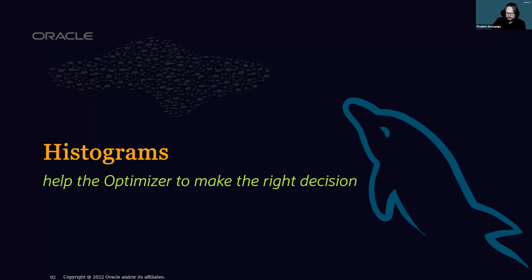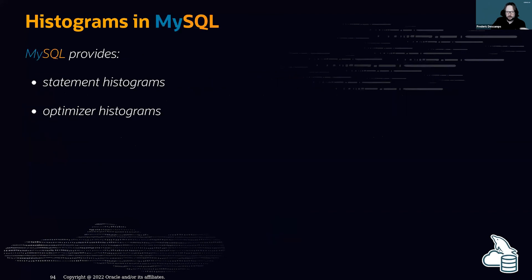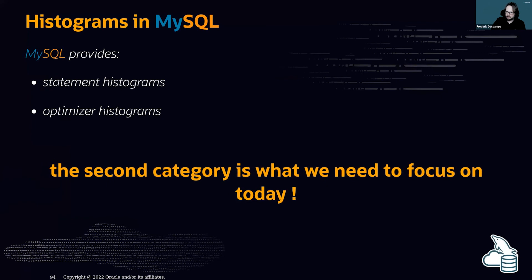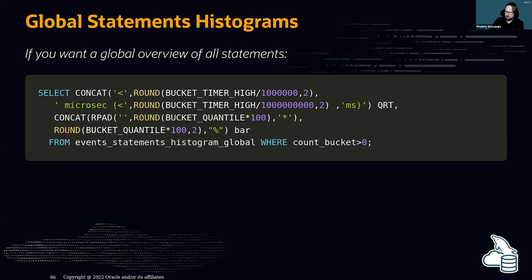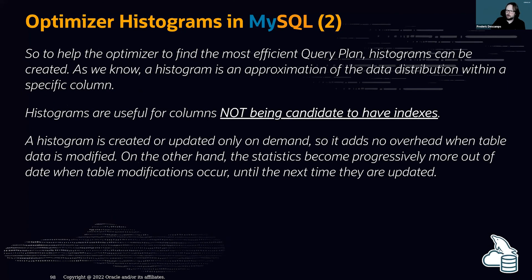In MySQL you also have histograms — useful when you are not able to create indexes. There are two types: statement histograms and optimizer histograms. The optimizer histograms are the important ones. When there are too many distinct values to index effectively, MySQL has the possibility to create a histogram to help the optimizer make better decisions.